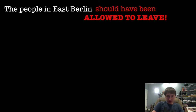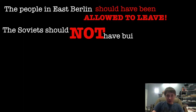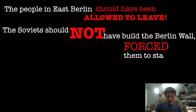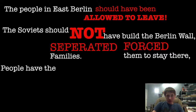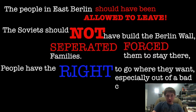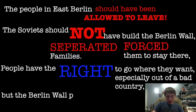In summary, the people in East Berlin should have been allowed to leave. The Soviets should not have built the Berlin Wall. The Soviets forced the people of East Berlin to stay and made it so they couldn't see their families or live where they wanted. People have the right to go or live where they want and get out of a country if they want to, but the Berlin Wall prevented them from doing that. Thank you for watching my documentary. I hope you liked it and learned something today. Once again, my name is Paul Neufer — goodbye!